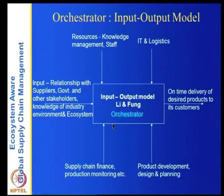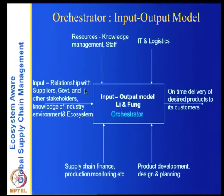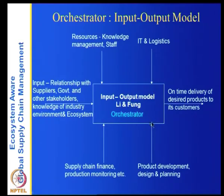Before mapping, let us look at the input-output model of Li and Fung. You get the product development, design, and planning — that is what Li and Fung does for customers. Once approved, it handles supply chain finance and production monitoring. Its inputs include relationships with suppliers, government and other stakeholders, knowledge of industry environments and the ecosystem, and resource and knowledge management. The output is on-time delivery of desired products to its customers.